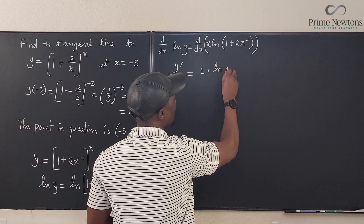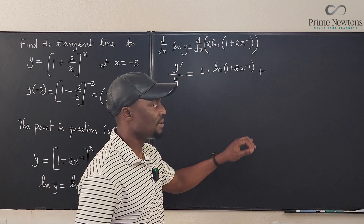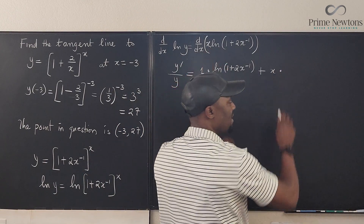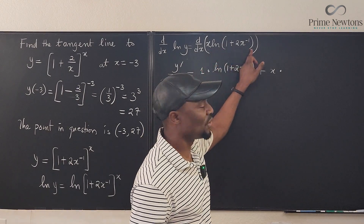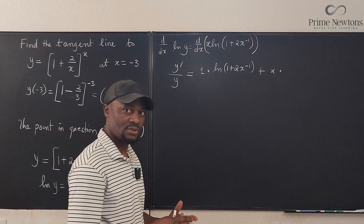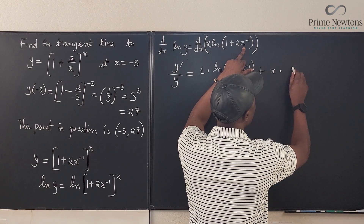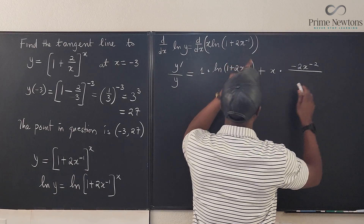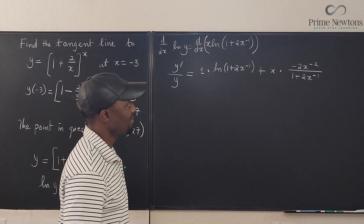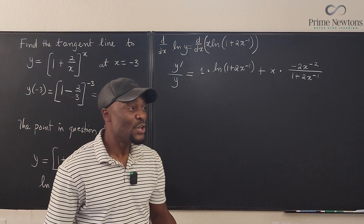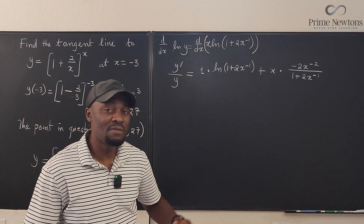Differentiating the natural log of 1 plus 2x to the negative 1: the derivative is the derivative of the argument divided by the argument. The derivative of 1 plus 2x to the negative 1 is minus 2x to the negative 2, divided by 1 plus 2x to the negative 1. This is where this topic is nicer — you don't have to fully simplify because we're not looking for the derivative as a function; we're looking for the slope.